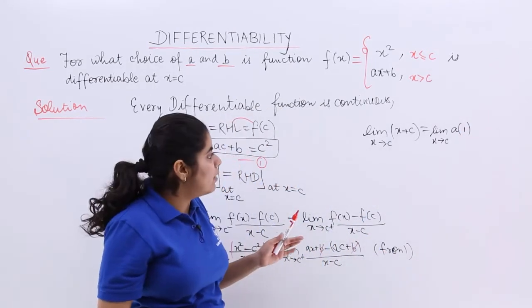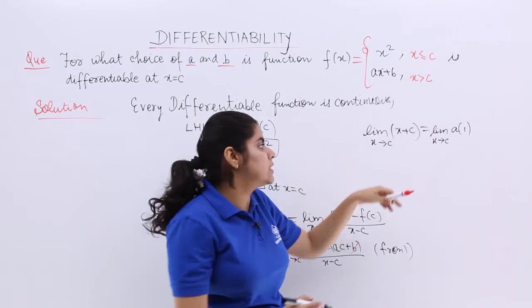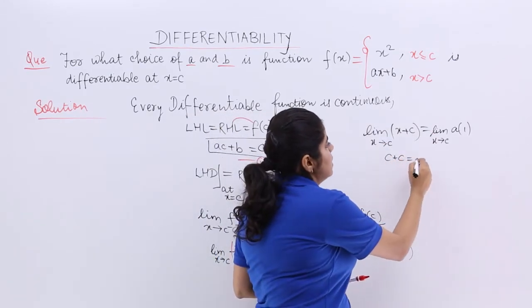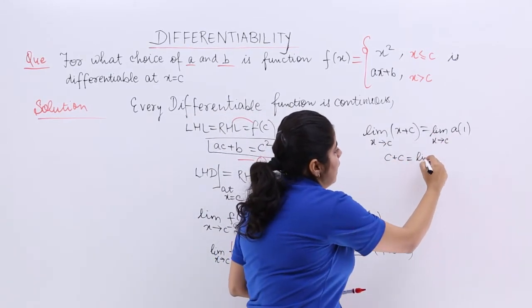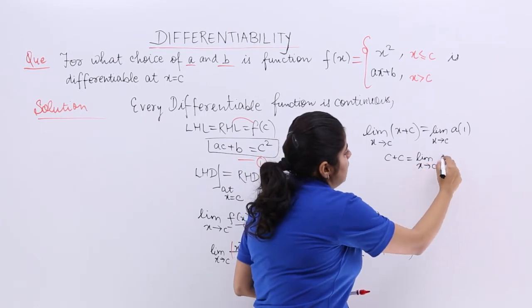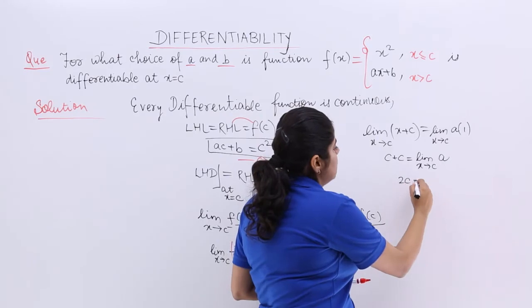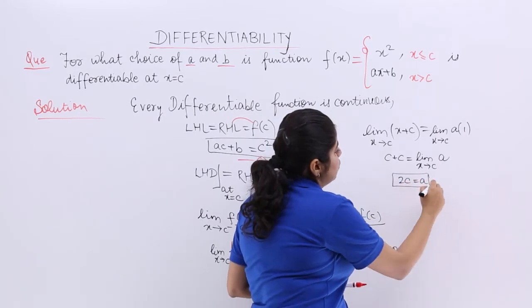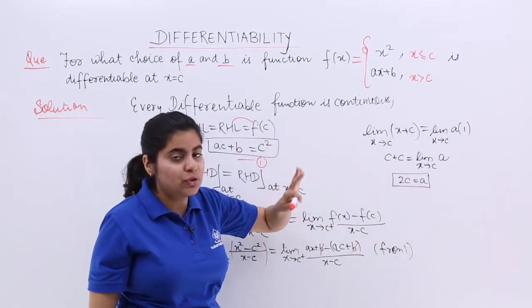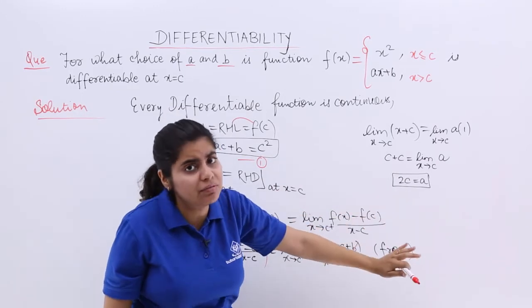Now, what are we left with? Basically, you can always put this c. So, c plus c is equal to limit x tends to c and here it is A. Now, c plus c is 2c is equal to A. So, A is having the value of 2c. That is my answer for the value of A.